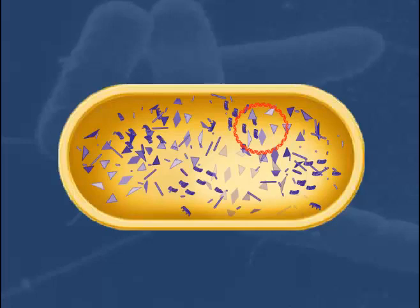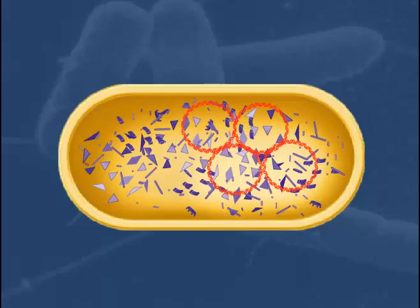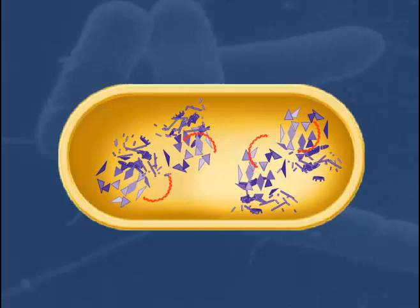First, many copies of the phage DNA are made. The phage DNA encodes the proteins which form the capsid and the regulatory proteins which direct their production and assembly into phage coats.